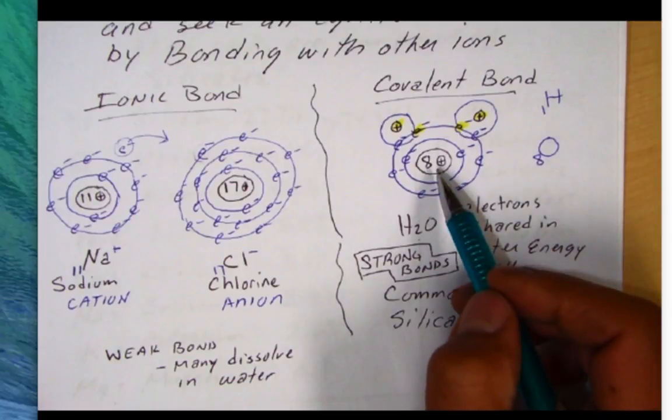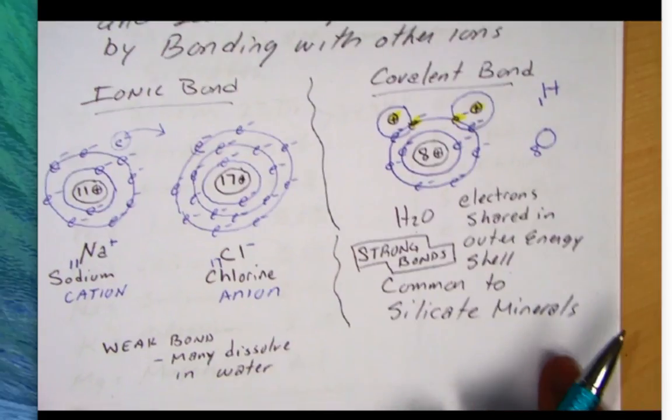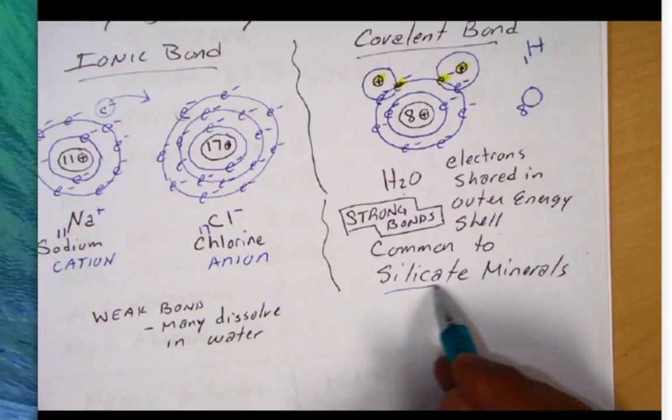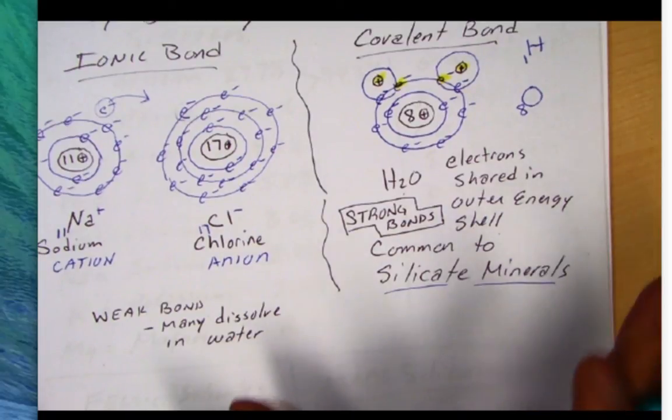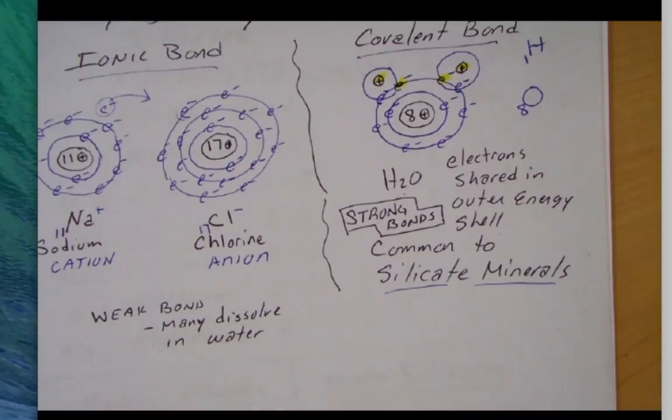So that's an example of a covalent bond. And you'll see that the rock forming minerals, they're called the silicate minerals, have this covalent bond. Well let's stop here for a minute and then we'll continue on in just a minute.